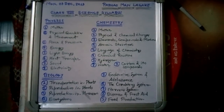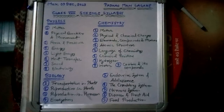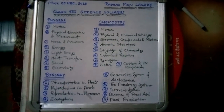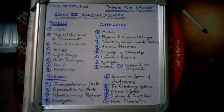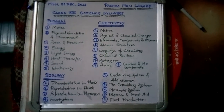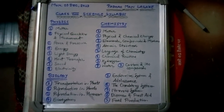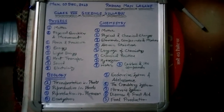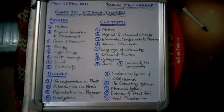In chemistry, there are 9 chapters. Chapter 1: Matter, Chapter 2: Physical and Chemical Changes, Chapter 3: Elements, Compounds and Mixtures, Chapter 4: Atomic Structure, Chapter 5: Language of Chemistry, Chapter 6: Chemical Reactions, Chapter 7: Hydrogen, Chapter 8: Water, Chapter 9: Carbon and Its Compounds.